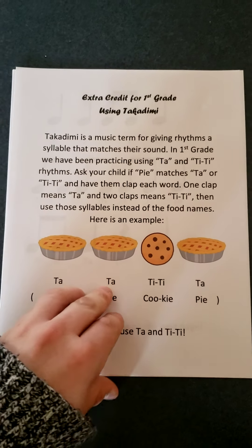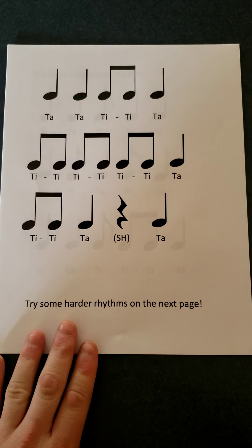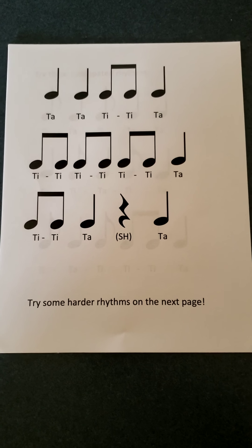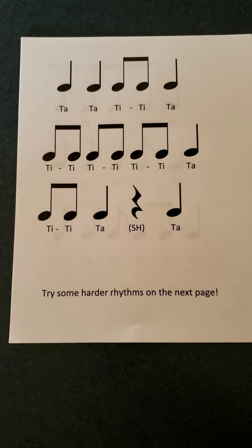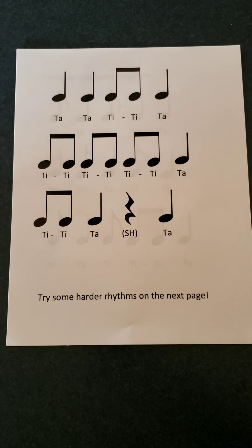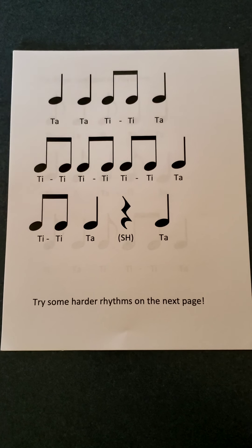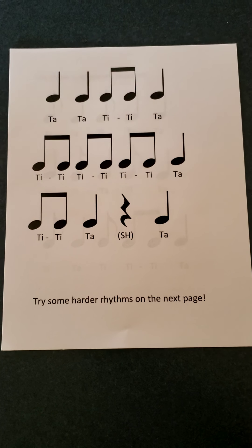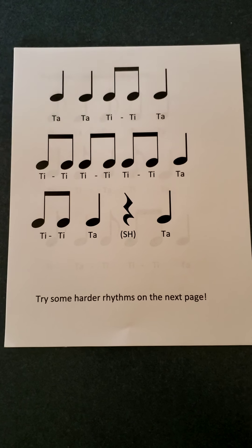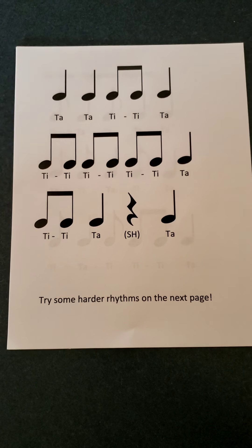If you are in second grade or third grade, you know how to read without pictures. You can use the notes. We have quarter note, ta; eighth note, ti-ti; and quarter rest — shh, or no sound. Let's start with a steady beat. One, two, steady beat. Read the first line with me. One, two, ready, go. Ta, ta, ti-ti, ta. Try by yourself. Ready, go. Middle line with me, go. Ti-ti, ti-ti, ti-ti, ta. Try by yourself. Ready, go.